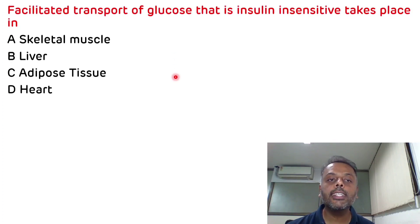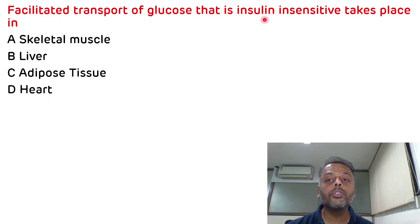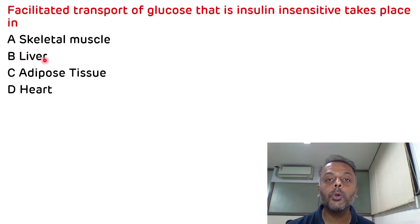The second question is: facilitated transport of glucose that is insulin insensitive takes place in which tissue? Options are skeletal muscle, liver, adipose tissue, and heart. Transport in skeletal muscle, adipose tissue, and heart is insulin dependent. Transport in the liver via GLUT2 is insulin independent. So the correct answer is liver.